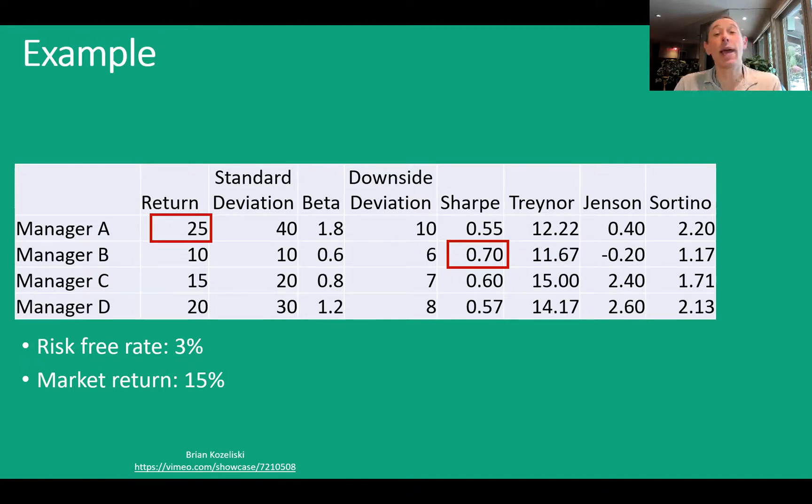Now, if we go, instead of looking at standard deviation, we look at beta, which is the Treynor measure. Then, hey, manager C is now the better performing manager. Jensen's alpha. So again, alpha versus our expected return based on beta. Here we say, hey, manager D is actually the best manager out here.